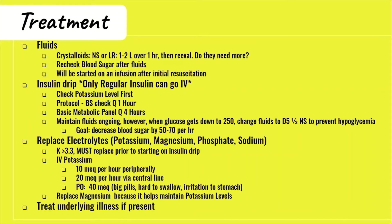To volume resuscitate, give one to two liters of crystalloid over one hour, then reevaluate to determine if more fluids are needed as a bolus. Fluids are critical because patients will be very dehydrated — often borderline in shock — and early resuscitation prevents the consequences of shock. Recheck blood sugar after giving the initial fluids to assess the impact before starting the insulin drip, as blood sugar can drop significantly from fluids alone. After initial boluses, the patient will be started on a fluid infusion.